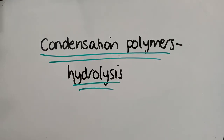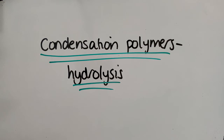We're now going to be looking at the hydrolysis of condensation polymers — by condensation polymers I'm referring to polyesters and polyamides. When we're talking about the hydrolysis of them, that means breaking down those polymers back into their monomers using water. So as you'll see in the reaction conditions, they'll all be done under aqueous conditions, so water has to be present to help break up those amide bonds or those ester bonds.